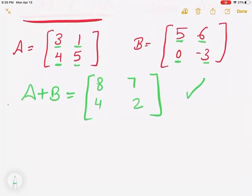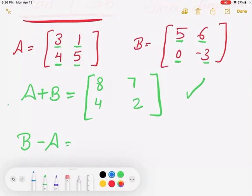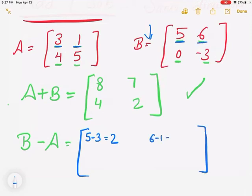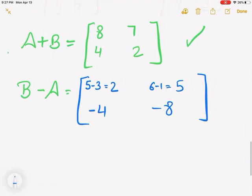Now let's do subtraction: B minus A. This time you put matrix B first, then subtract matrix A. So 5 minus 3 is 2, 6 minus 1 is 5, 0 minus 4 is negative 4, and negative 3 minus 5 is negative 8. That's how we add or subtract. First, make sure the matrices are the same size, then just add or subtract corresponding elements.